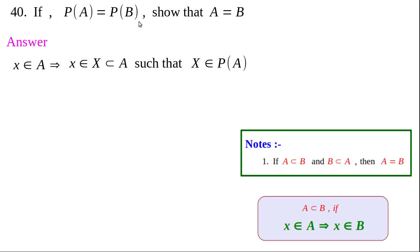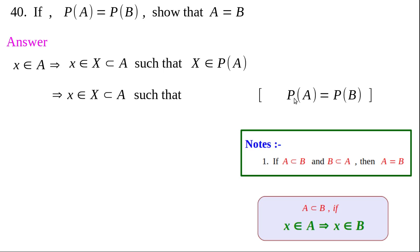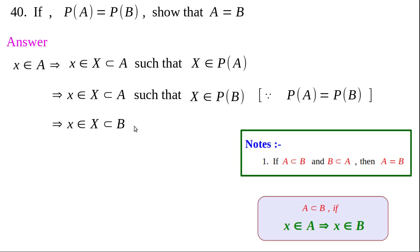Since capital X is in P(B), capital X is a subset of B. Since x belongs to capital X and capital X ⊂ B, we can say x∈B. So whenever x∈A then x∈B, meaning A⊂B. That is our first result.